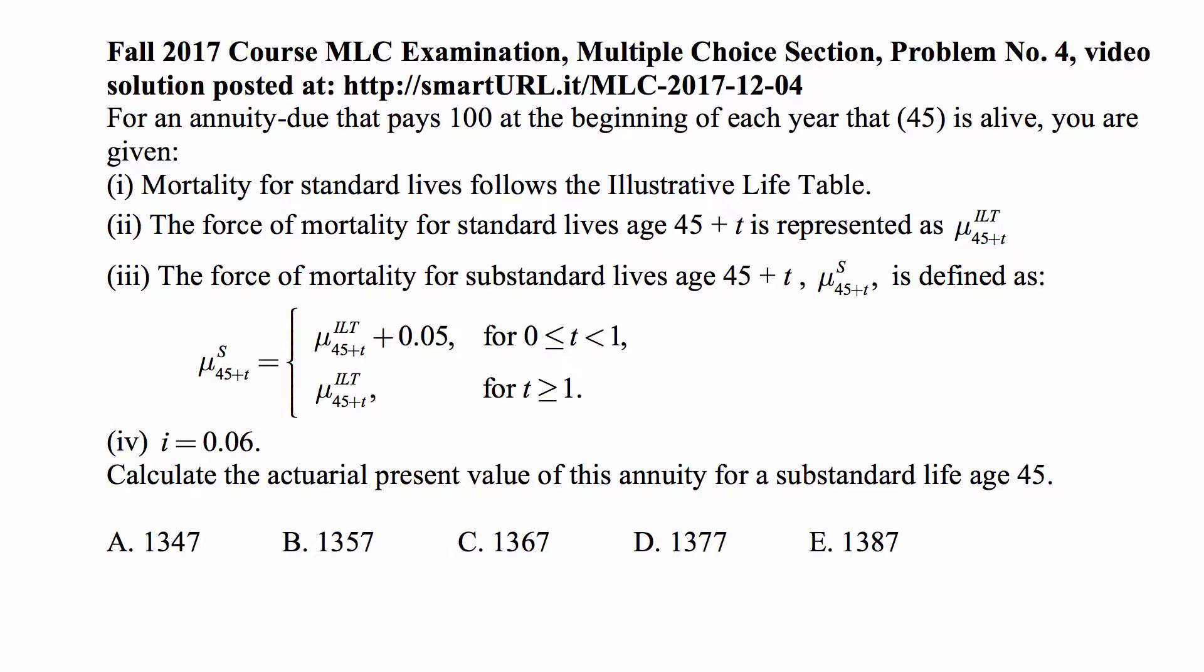The force of mortality for substandard lives age 45 plus t, with superscript s indicating substandard lives, is defined as the force of mortality from the illustrative life table plus 0.05 for time t between 0 and 1. That means for the year of life between ages 45 and 46. And then beyond age 46, this reverts to the force of mortality in the illustrative life table.